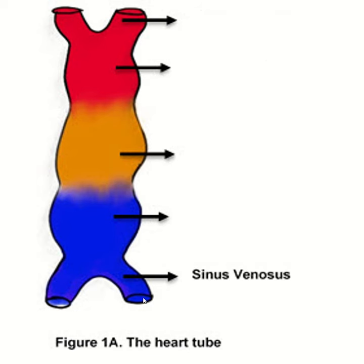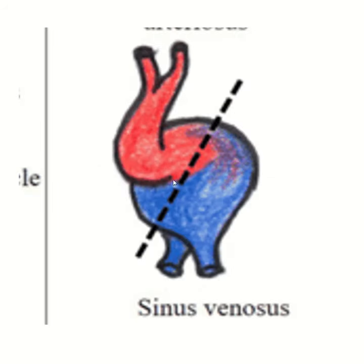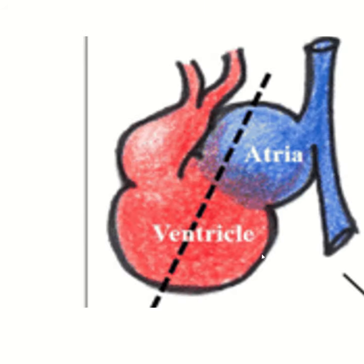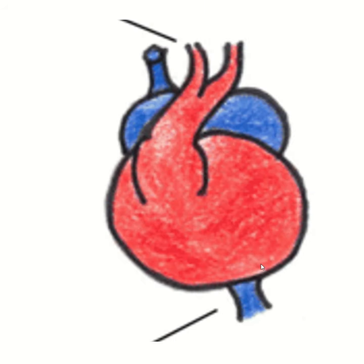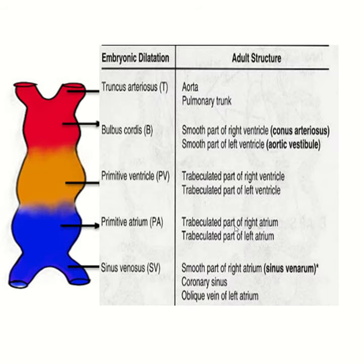This is the right horn and this is the left horn. This is the artery line, this is the venous line, and the bending of the two ends for the development of the heart. This is the final structure of the heart.